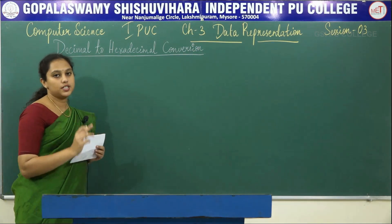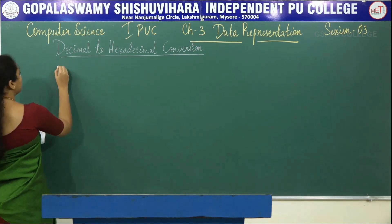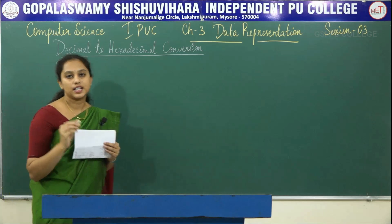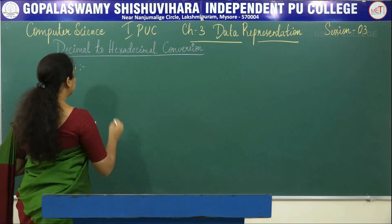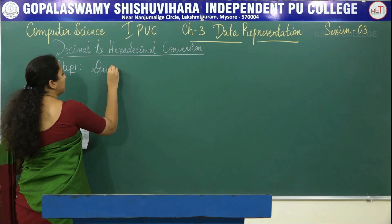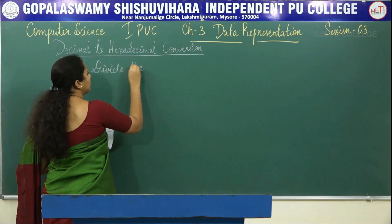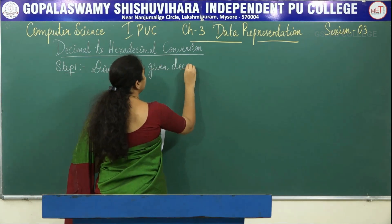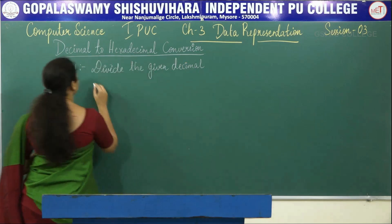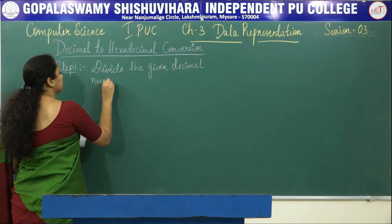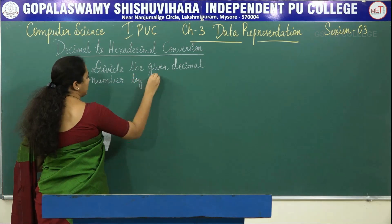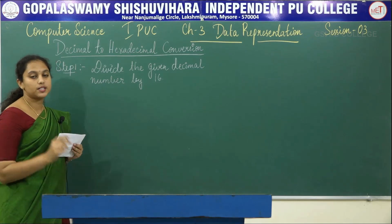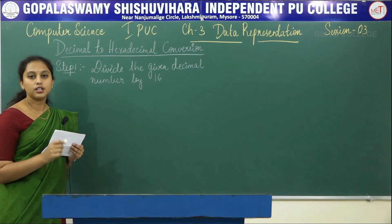What is the first step? The first step is we have to divide the given decimal number by 16. What is step 2? Step 2 is to note down the remainder as well as the quotient.